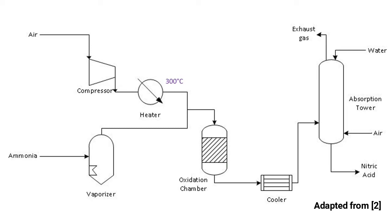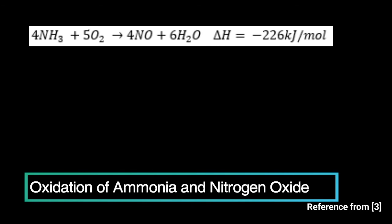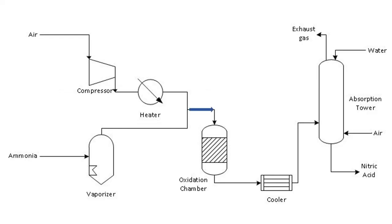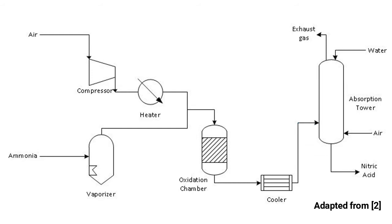This is where the oxidation of ammonia to nitrogen oxide occurs. As this reaction is highly exothermic, the oxidation chamber may reach temperatures up to 800 degrees Celsius. It is therefore necessary to cool down the gases exiting the oxidation chamber to 150 degrees Celsius.